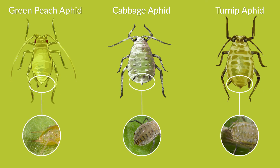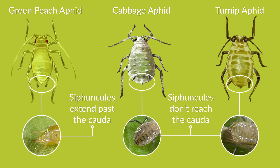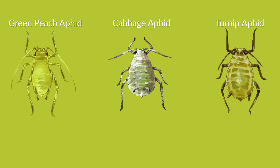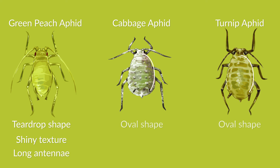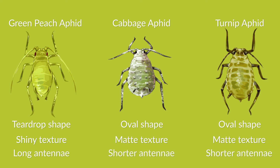Cyfuncles are exhaust pipe-like appendages that produce honeydew, and in some aphid species, pheromones. Green peach aphid have long cyfuncles that extend beyond their cauda, or tail, while cabbage and turnip aphids have shorter cyfuncles. The shape of aphid's bodies and the length of their antennae can also help with identification. Green peach aphid have a teardrop-shaped body with a shiny texture and long antennae that extend their body's length, while cabbage and turnip aphid have a more oval shape with a matte texture, and their antennae are shorter.